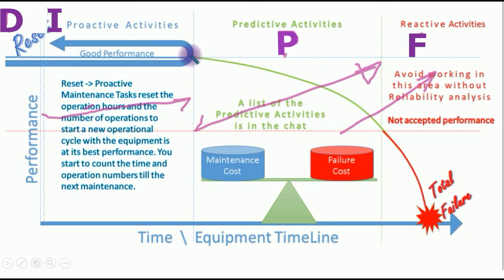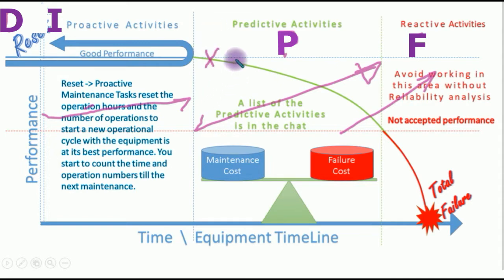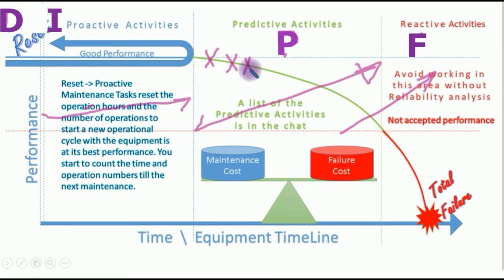Here, the first part is for the oil — so when you make oil or lubricant analysis, you are here. After that, if you are adopting the ultrasonic measurements, you are working here, so the ultrasonic detects a failure at this point. After the ultrasonic, you have the vibration analysis, which detects a failure further along — because at this stage, it's only some changes in the oil, grease, or lubricant.